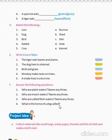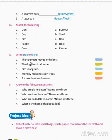True or false. The tiger eats leaves and plants — false. The dog lives in a kennel — true. Birds eat cranes — true. Monkey makes nets on trees — false. A snake lives in a boro — false.